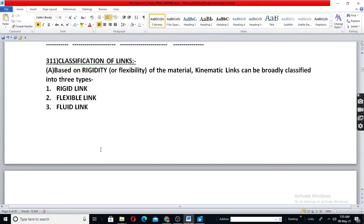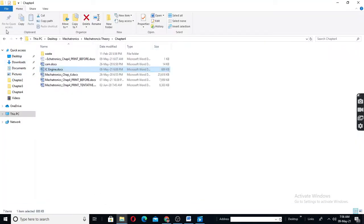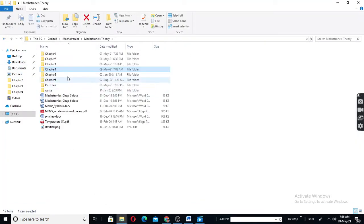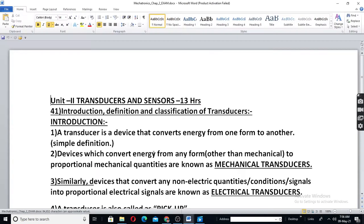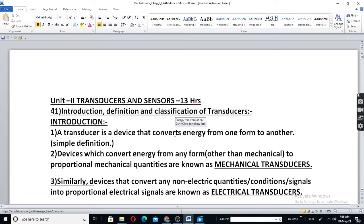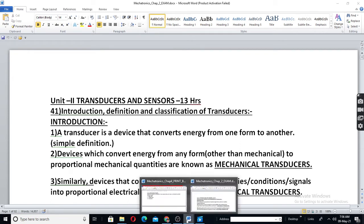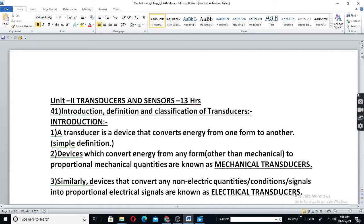In the previous class, we had said that a link should be completely rigid or 90% or 99% means it should be resistant. But practically, it can be rigid or even flexible or even fluid means liquid or gas. Let us see how it is.